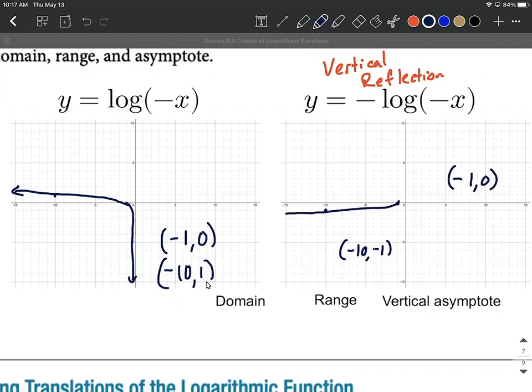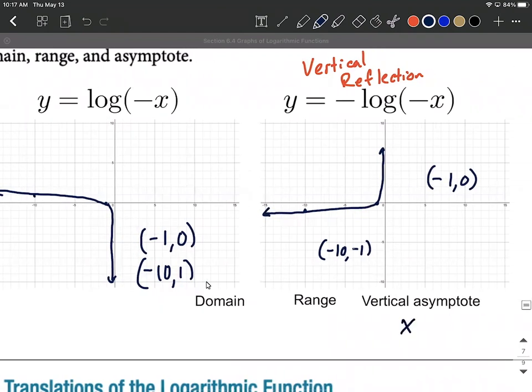And kind of connecting these together doesn't affect our vertical asymptote. That's still going to be right here at the y-axis so we can say that's when x equals zero. Our range as always on these logarithmic graphs negative to positive infinity and again the domain here it goes off to the left hand side forever so we'd say negative infinity for our x values out there.